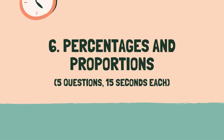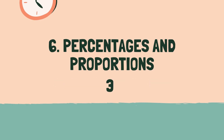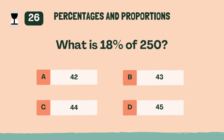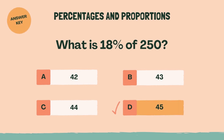Category 6: Percentages and Proportions. 3, 2, 1, go. D, 45.